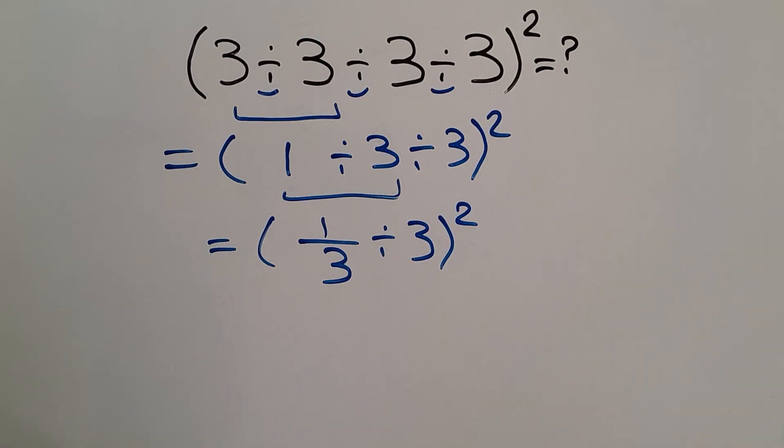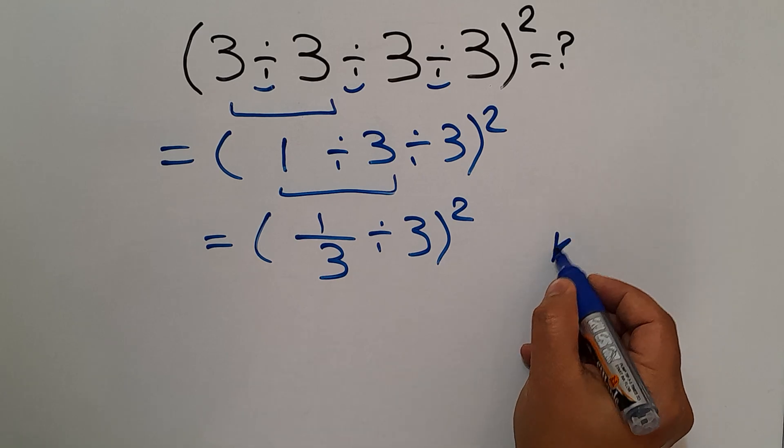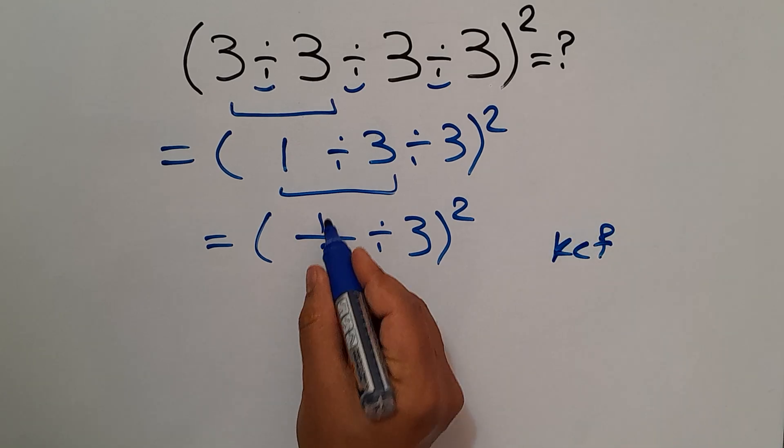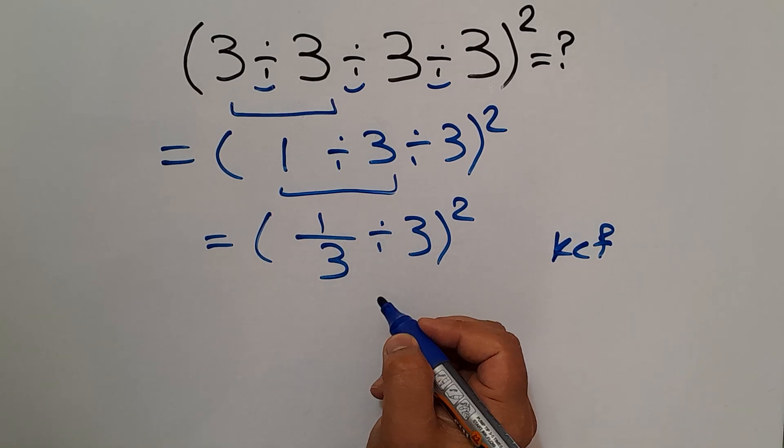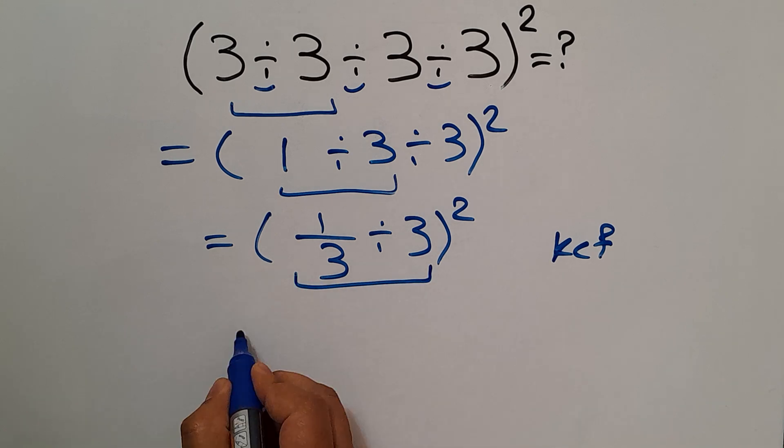Now, according to the KCF rule, 1 over 3 divided by 3 can be written as: